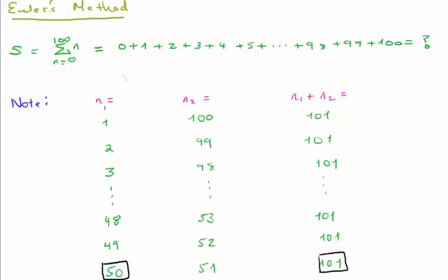What Euler did was he started looking at pairs of numbers and their sum. So he picked 1 and 100 and saw that their sum was 101. He incremented 1 and decremented 100, so he added 2 and 99, which of course also adds to 101.